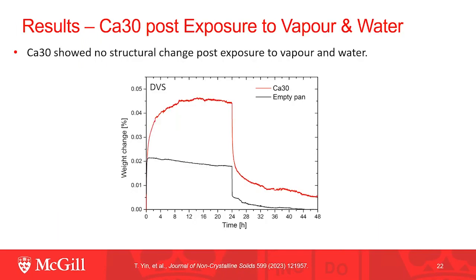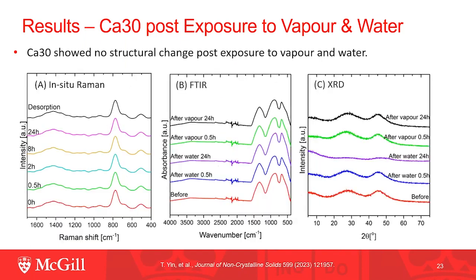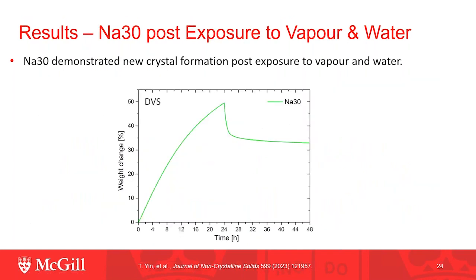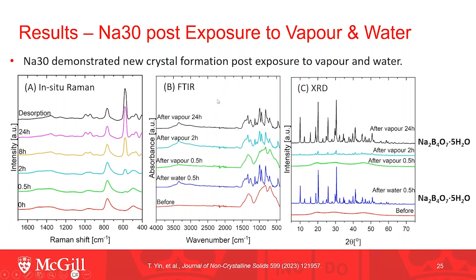For calcium-30, there is almost no weight change at 90% RH. From ICP, Raman, FTIR, and XRD, there is no structural change for calcium-30 when exposed to vapor. Similarly from FTIR and XRD, there is no structural change for calcium-30 when exposed to water. For sodium-30, it has much more weight change after exposure to vapor, and from ICP, Raman, and FTIR analysis, there is new phase formation after two hours of vapor exposure. This new phase was identified as a crystal by XRD. The same crystallization also occurred when sodium-30 was immersed in water for just 30 minutes.